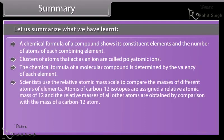Scientists use the relative atomic mass scale to compare the masses of different atoms of elements. Atoms of carbon-12 isotopes are assigned a relative atomic mass of 12, and the relative masses of all other atoms are obtained by comparison with the mass of a carbon-12 atom.